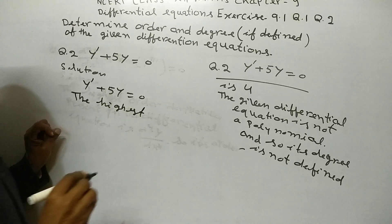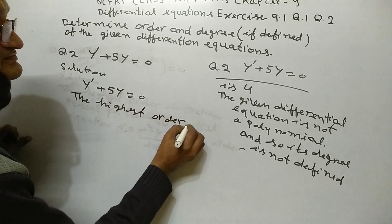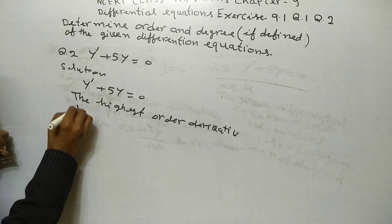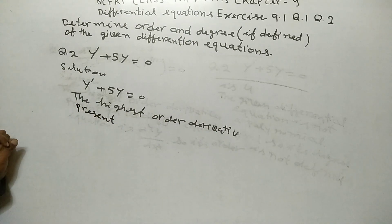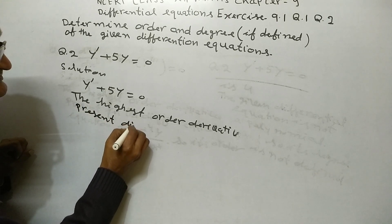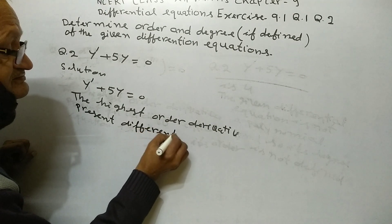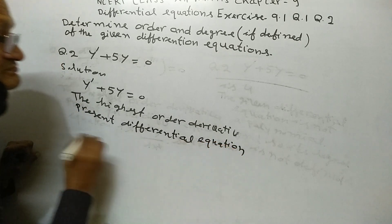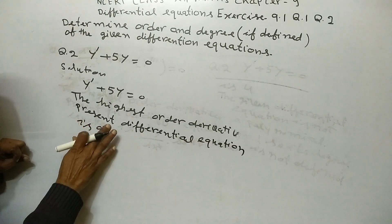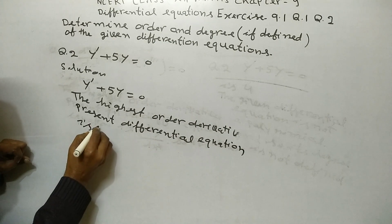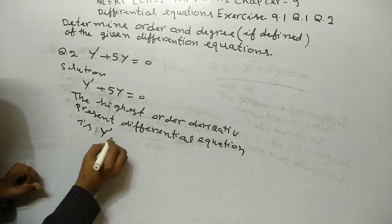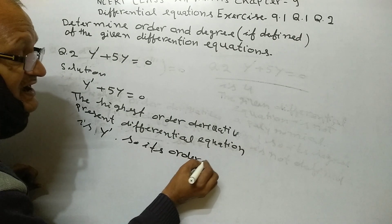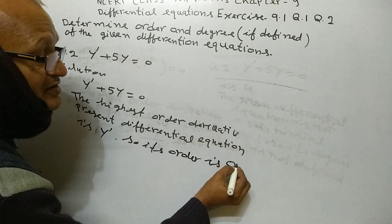The highest order derivative is dy upon dx. Its order is 1.